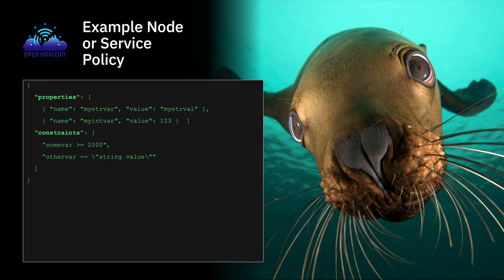Here's what an example node or service policy looks like. They contain properties and constraints. Properties are just name-value pairs — like variables. For example, one property named 'my_str_var' has the value 'my_str_val', and another called 'my_int_var' has the value 123. You can give properties whatever names and values you like. Constraints are conditional expressions that refer to these variables. In another policy, a variable like 'some_var' must be defined and must be greater than or equal to 2000, and 'other_var' must have the value 'string_value' in order for those constraints to be resolved.